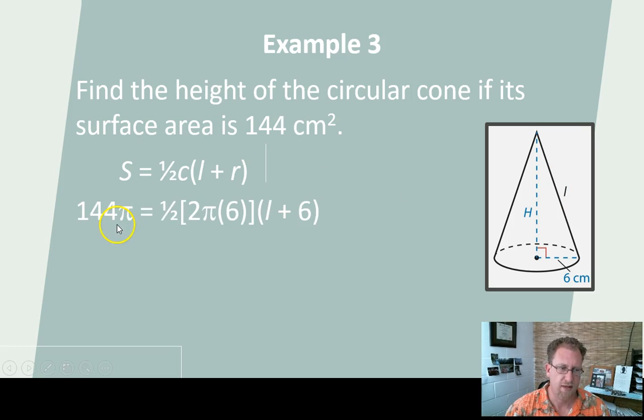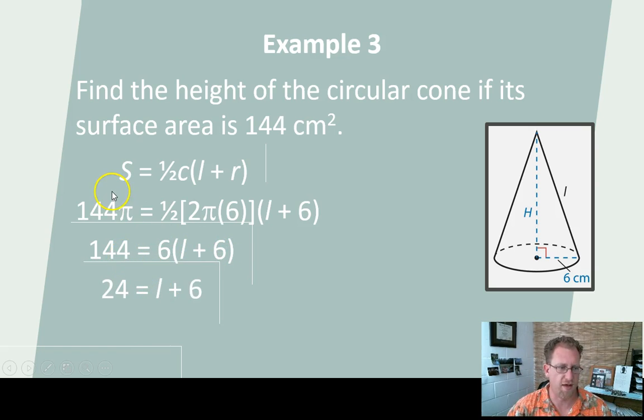144π equals one half times, they didn't say π. Another typo. Good times. 144π equals one half times the circumference, 2πr, times the sum of L and 6. So you can simplify all these numbers, right? And you can get 6 times L plus 6. Well, that's 6L. And look at that. The π went away. That should have been a π, because then they divided both sides by π. Get rid of that. 24 equals L plus 6. And then L is 18. So the slant height is 18.